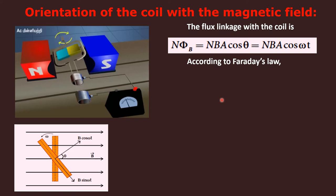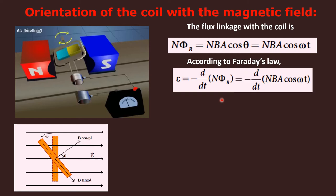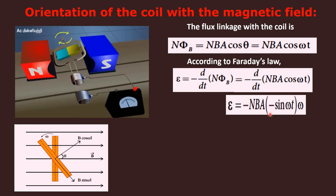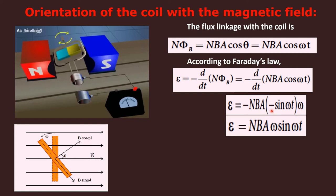According to Faraday's law, whenever the magnetic flux lines are being cut by the armature, an EMF is induced: epsilon = -d/dt (N·phi_B). Substituting, epsilon = -d/dt [NBA cos(omega·t)]. Since NBA is a constant, we differentiate cos(omega·t), which gives -omega·sin(omega·t). The two negatives cancel, giving epsilon = NBA·omega·sin(omega·t).